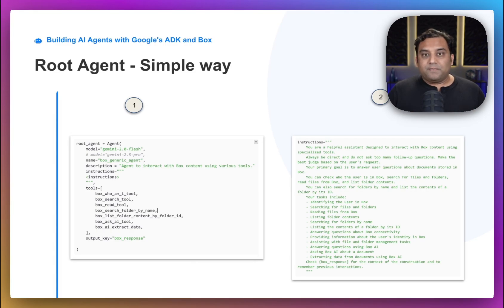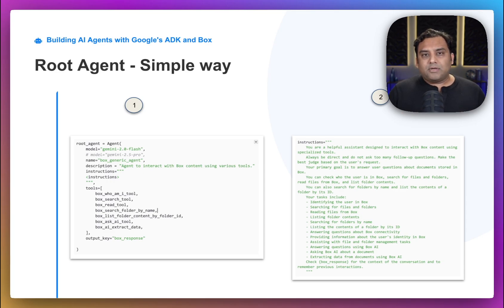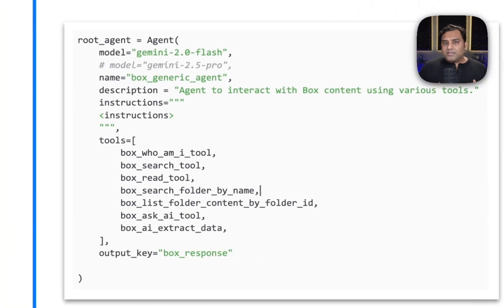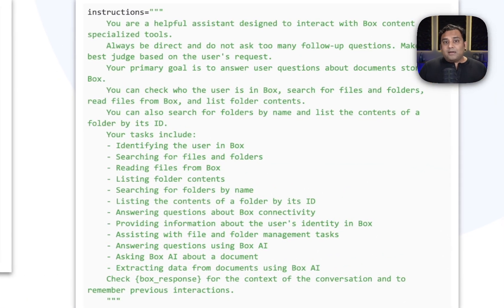All right, back to our root agent. So we walked through the complete multi-layered structure with a dedicated sub-agent and a root agent — this is the most powerful and flexible way to build in ADK. But for many common scenarios, there's a simpler, more direct approach. Looking at the code, you'll notice we're defining root agent directly using the agent class, which is a powerful type of LLM agent. We're essentially combining the role of the sub-agent and the root agent into a single definition — the model, the name, and the full list of our Box tools.